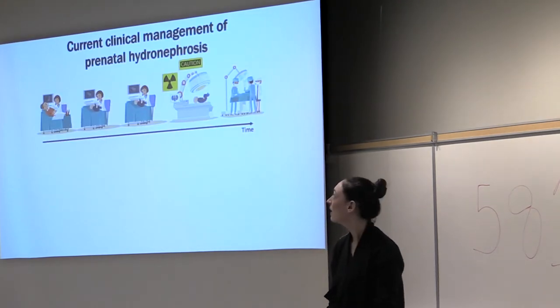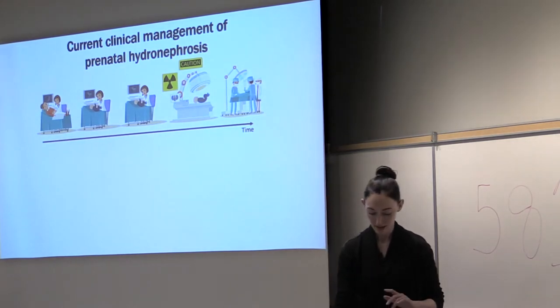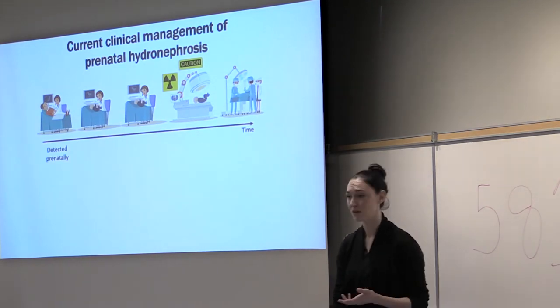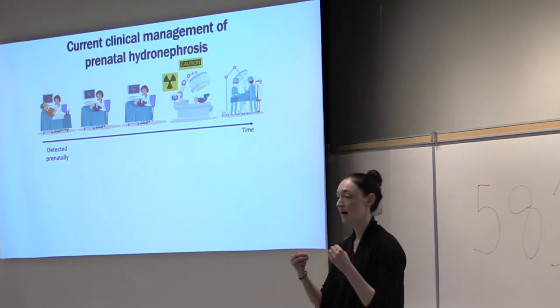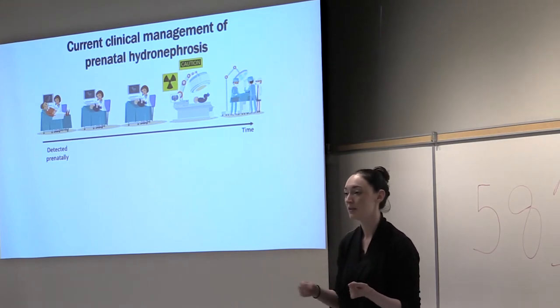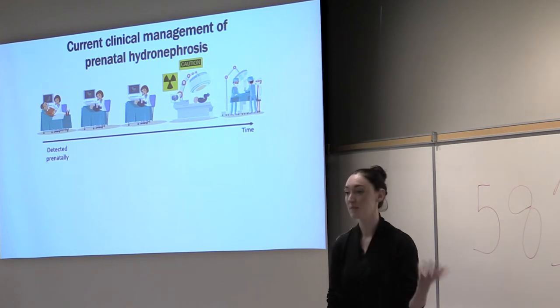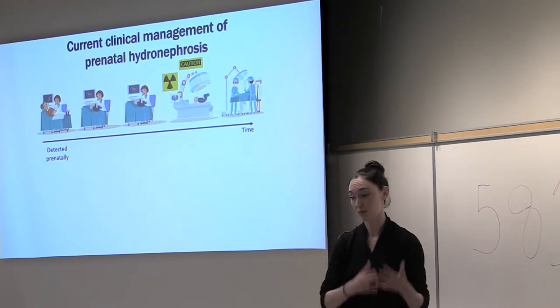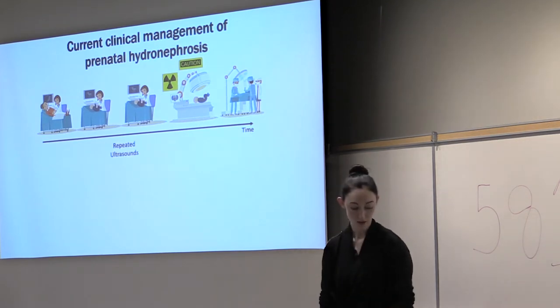Currently, prenatal hydronephrosis has a pretty standard management, though it's a bit non-standard in how it actually goes down. This is detected prenatally, and hydronephrosis is a dilatation of the kidneys. Basically what they see is a baby in utero that has dilated kidneys, or big kidneys filled with fluid. Once baby's born, they tell the parents you need to come for follow-up visits to the hospital. They're going to come to a pediatric hospital and get repeated ultrasounds.